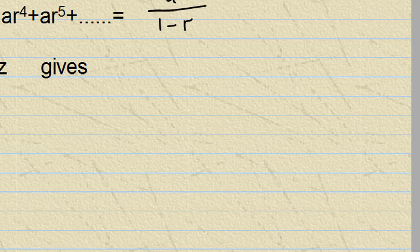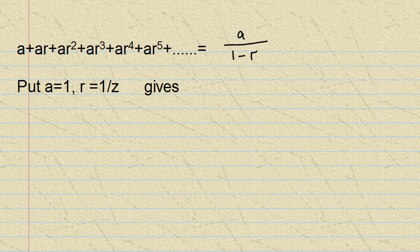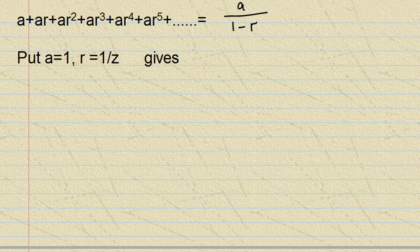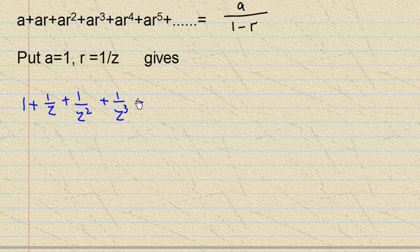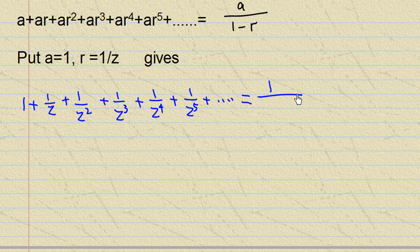So going back to our z-transform, we put a equal to 1 and r equal to 1/z. Then you are going to get 1 + 1/z + 1/z² + 1/z³ + 1/z⁴ + 1/z⁵ and so on. And according to the formula, it is a/(1-r) which is 1/(1-1/z).